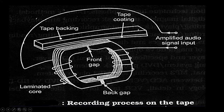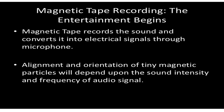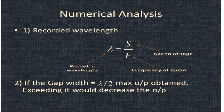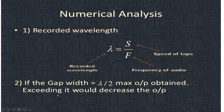That magnetic energy is collected on a material that is sensitive to magnetic properties — the tape backing and tape coating. The recording process on tape is almost obsolete nowadays. Magnetic tape records sound and converts it into electrical signals through a microphone. Alignment and orientation of tiny magnetic particles depends on sound intensity and frequency. The recorded wavelength λ = s/f, where s is the speed of the tape and f is the frequency of the audio. If the gap width is λ/2, maximum output is obtained; extending it would decrease the output.